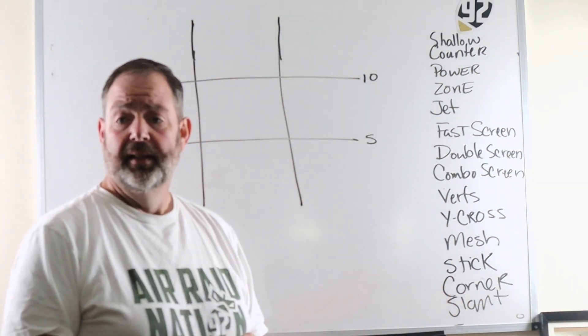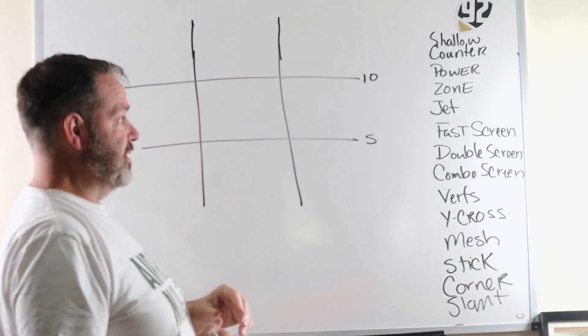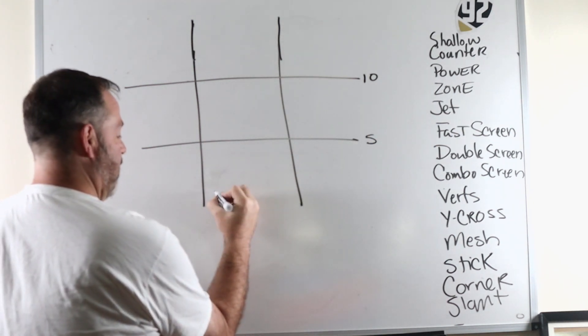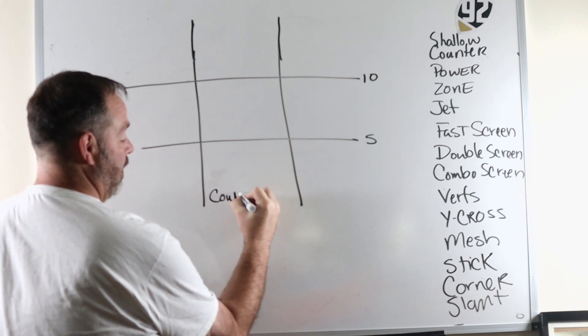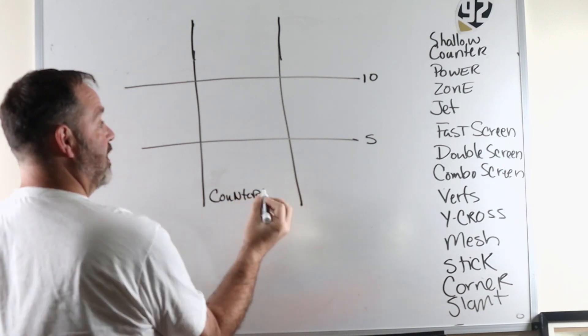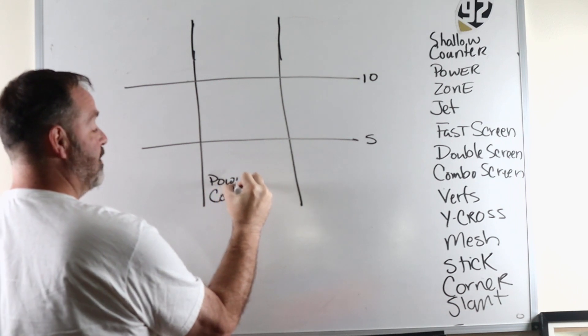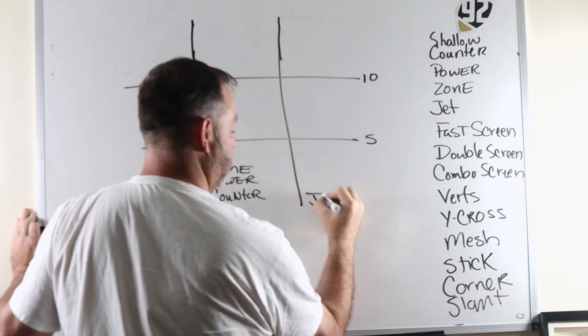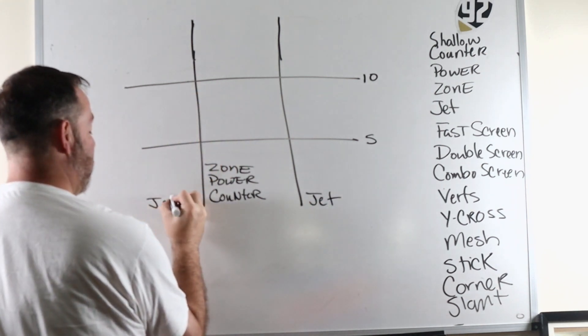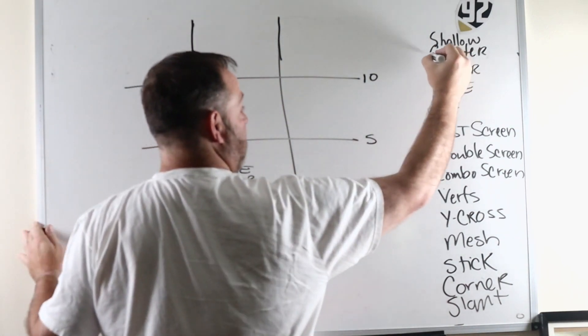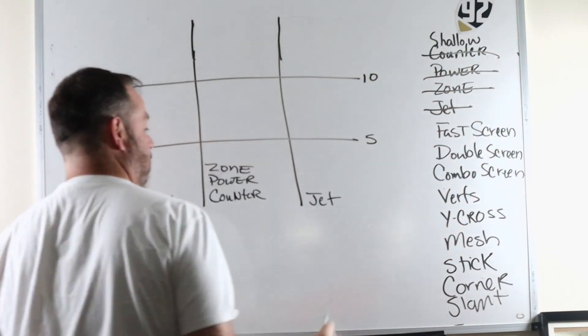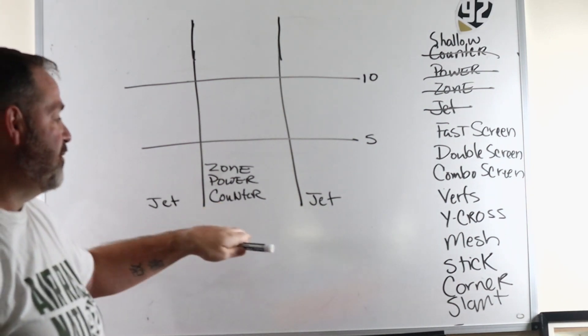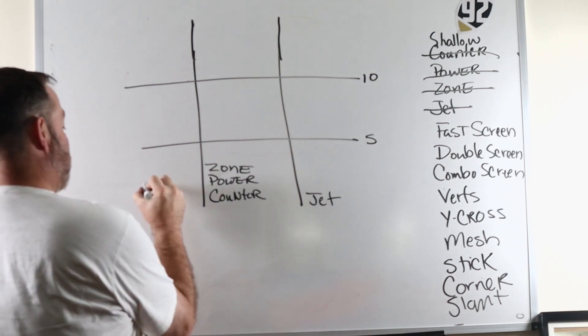So what I thought would be the best thing to do is look at your playlist and put them where they hit. Now, for simplicity's sake, I'm just going to label all the runs right here. Yes, they can bounce, yes, they can go outside, but where do they hit? So counter, power, zone, jet are going to go one, two, and three. Mostly, I'm going to hit the two hole with my inside run game. I'm going to hit the outside flats with my jet sweep. Same thing with fast screen.